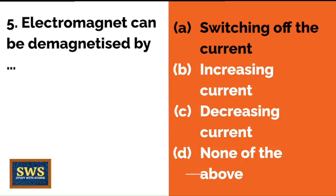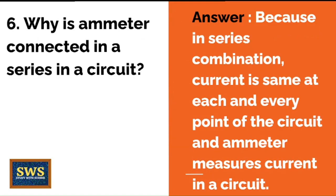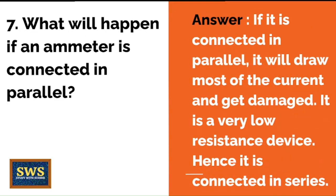So those were the five MCQs. There are five more one-or-two mark questions — mostly two-mark give-reason type questions. Why is an ammeter connected in series in a circuit? An ammeter is connected in series because in a series combination, the current is the same at each and every point of the circuit, and an ammeter measures current. Now, if an ammeter is connected in parallel, it will draw most of the current and get damaged, as it is a very low resistance device — hence it is connected in series. You can give this additional information to impress the examiner.